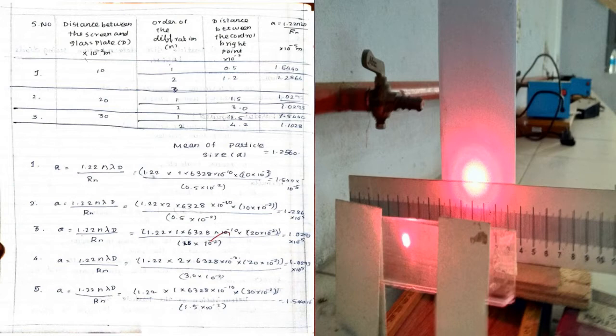Tabulation: distance between the screen and glass plate D in centimeters, order of diffraction n, distance between the central bright point and nth fringe R_n in centimeters.